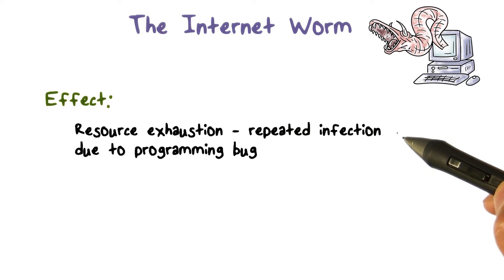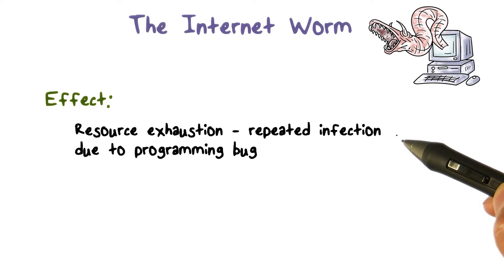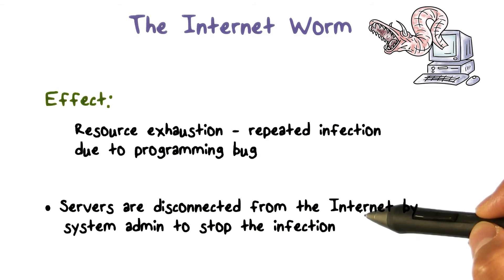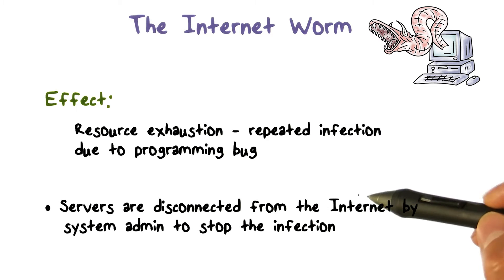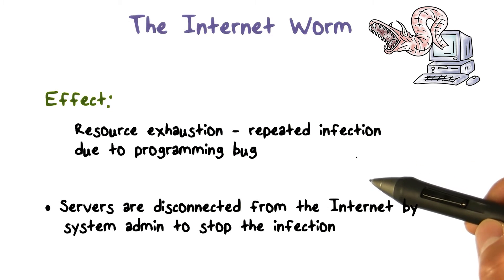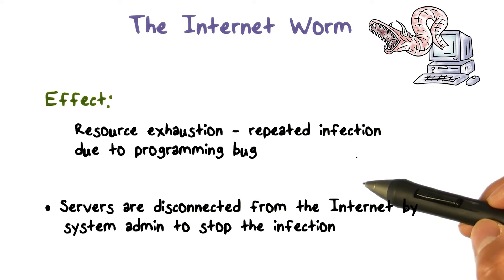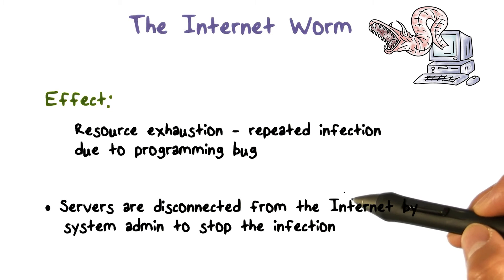This proved to be too aggressive. And as a result, many computers got infected repeatedly. That is, on these computers there were many instances of the same worm running, resulting in resource exhaustion. And that's really how the internet worm was discovered, because system administrators found that their servers were overloaded.